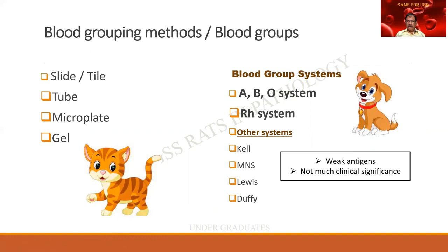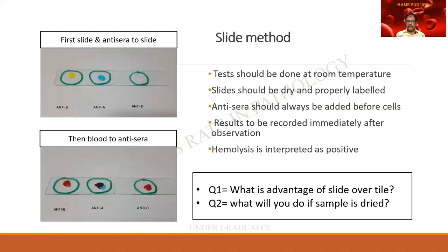Please take this matter very seriously. The slide method — also called the tile method — is used in examinations where a white tile or plate is provided. Two circles are drawn on one slide and a single circle on another. Anti-B, anti-A, and anti-D antisera are placed in each circle, followed by a drop of blood.